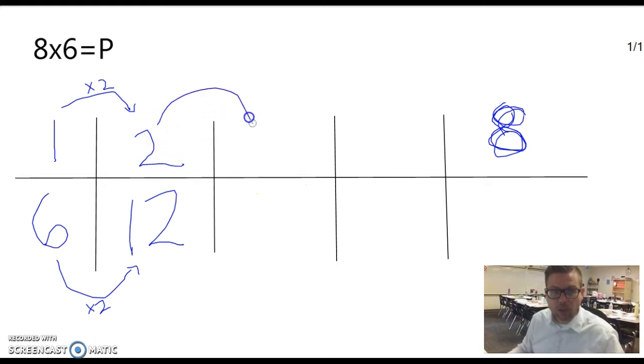Next I'm going to double the 2, and that is going to give me 2 times 2 is 4. And because I doubled the top, I got to double the bottom, and 12 times 2 is 24.